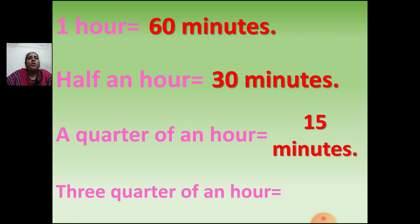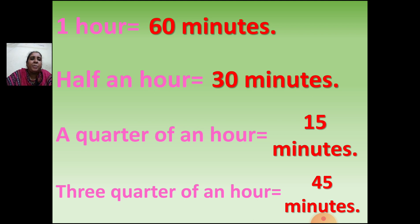Quarter is called half of half. Now three quarters of an hour — it is more than half. Half plus quarter is three quarter. So how many minutes are there in three quarters? 45 minutes. Remember: one hour is 60 minutes, half an hour is 30 minutes, a quarter hour is 15 minutes, and three quarters of an hour is 45 minutes.